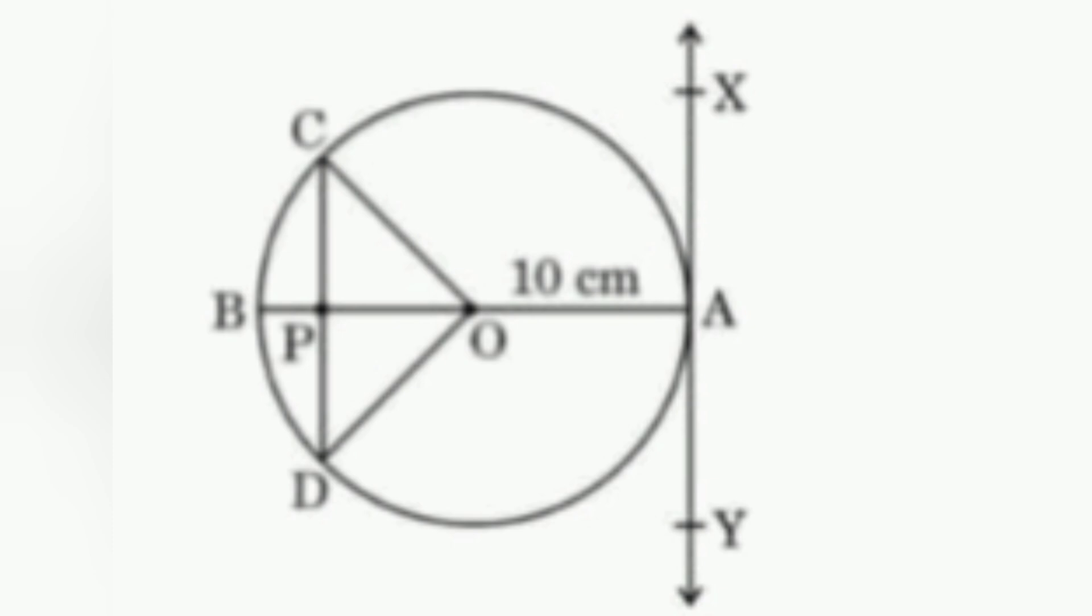AB is a diameter and CD is a chord. Therefore, OP is perpendicular to CD and OP bisects CD.